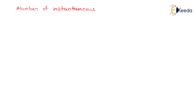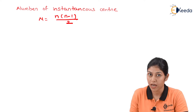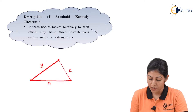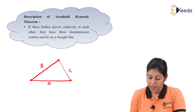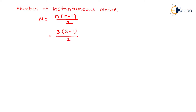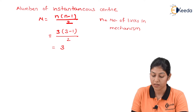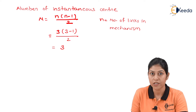This is the formula by which we can define the number of instantaneous centers for a mechanism. In this mechanism, if we have three links, we can define the mechanism by fixing one link — either link A, link B, or link C. Based on three links, we can define the total number of instantaneous centers as N(N-1)/2, which gives 3×(3-1)/2 = 3 instantaneous centers.